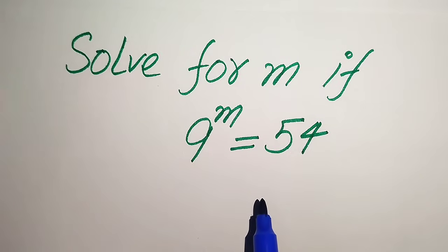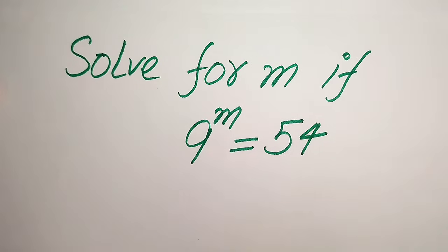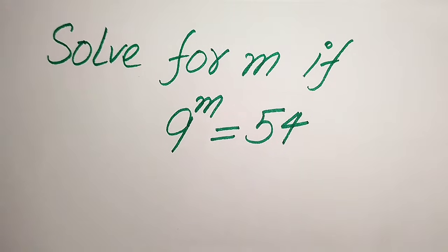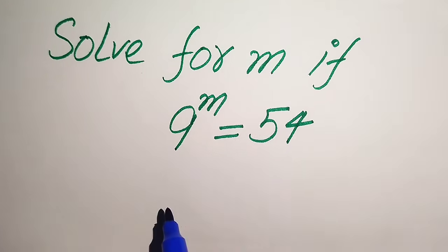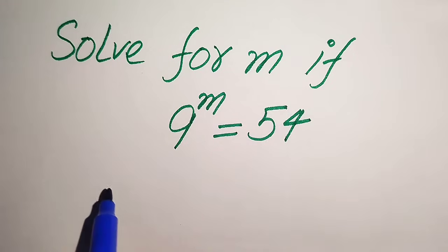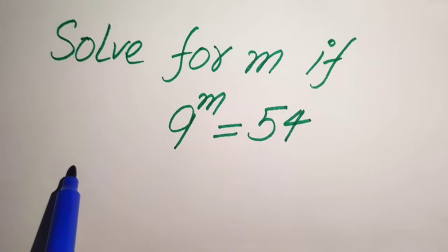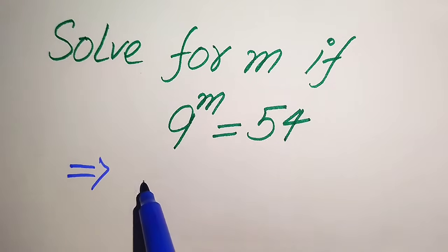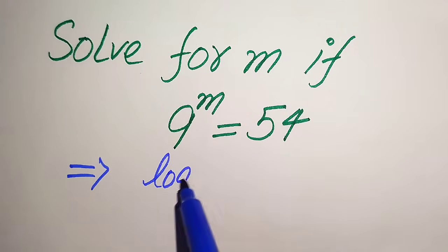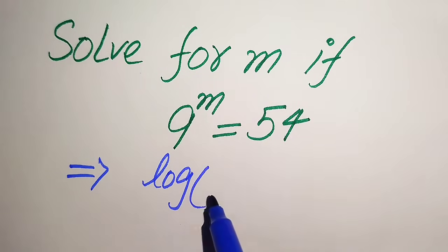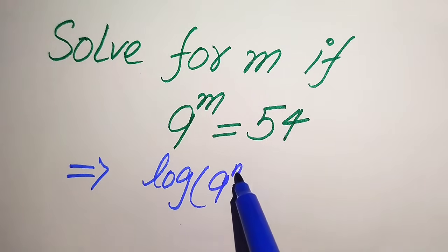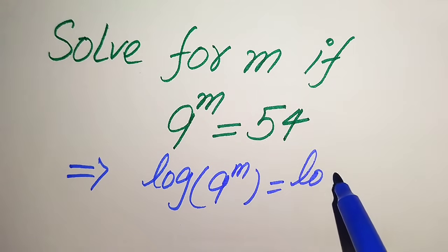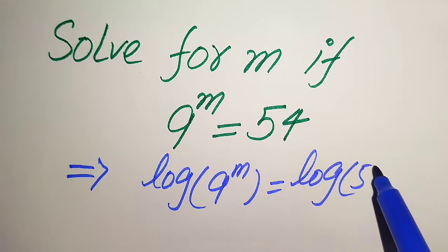The very first thing we are going to do is move our variable term from the exponent. For this, we need to take the log on both sides, so it will be written as log of 9 to the power of m is equals to log of 54.